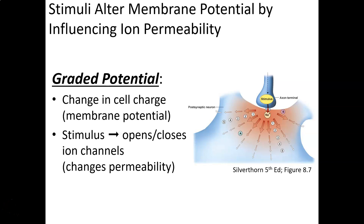Let's look at membrane permeability and how it influences membrane potential. There are two types of potentials we are primarily interested in. One type is called the graded potential, which is a change in membrane potential due to a stimulus that opens or closes an ion channel. These are single-gated channels for sodium, potassium, calcium, or chloride. Graded potentials actually result in action potentials, and action potentials cause graded potentials — they're related but also very different. We're going to look at how graded potentials influence action potentials.